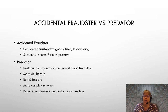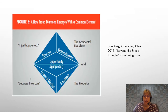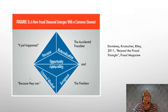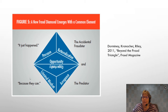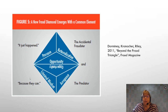He was definitely the most predator-type attitude of all the fraudsters I've ever heard. This led to the fraud diamond — two triangles on top of each other. On the top is the accidental fraudster, who has the traditional fraud triangle: opportunity, rationalization, and pressure. On the bottom is the predator, who needs opportunity, but also has a criminal mindset and is arrogant.